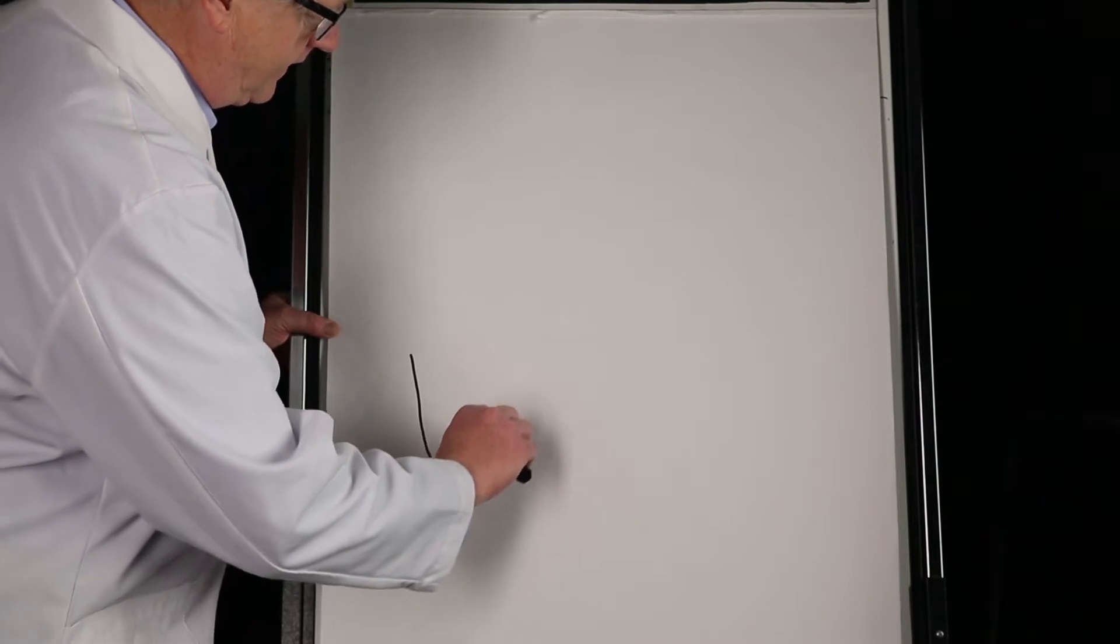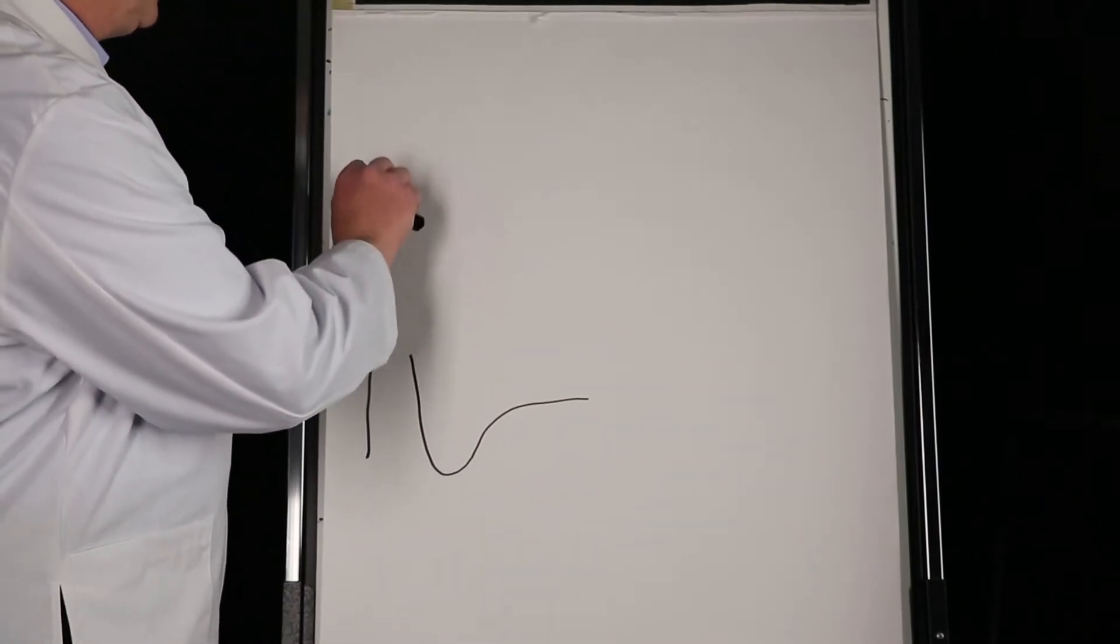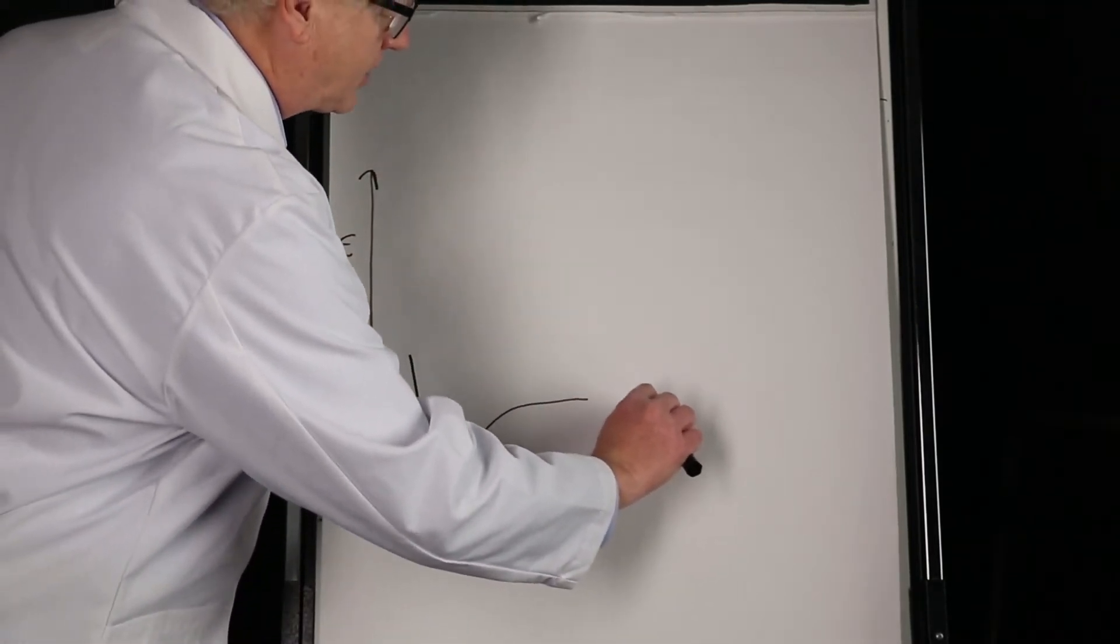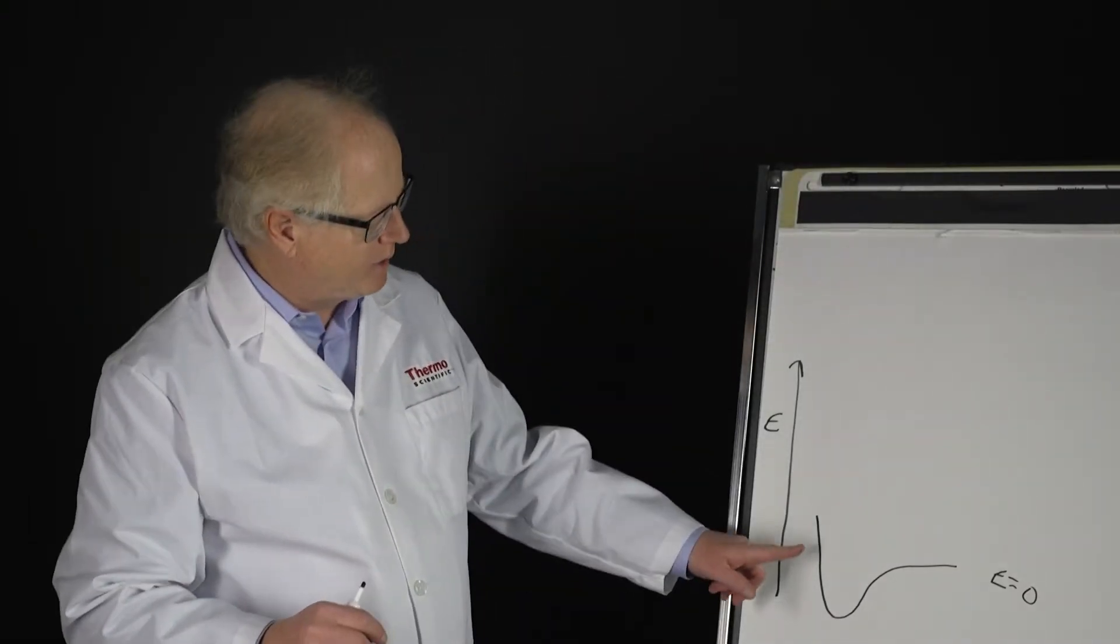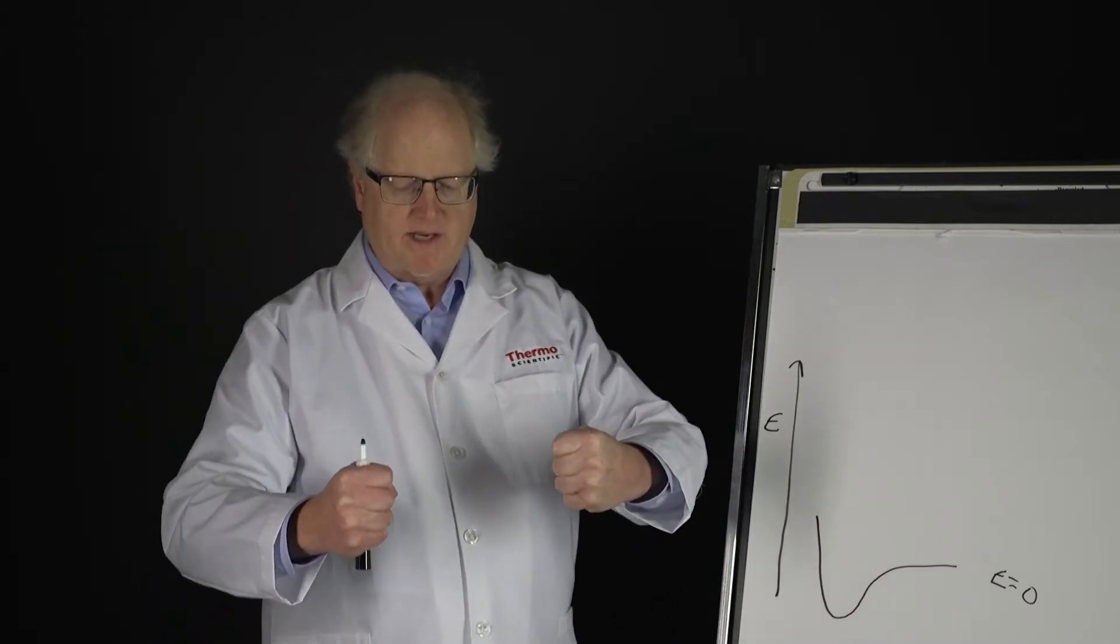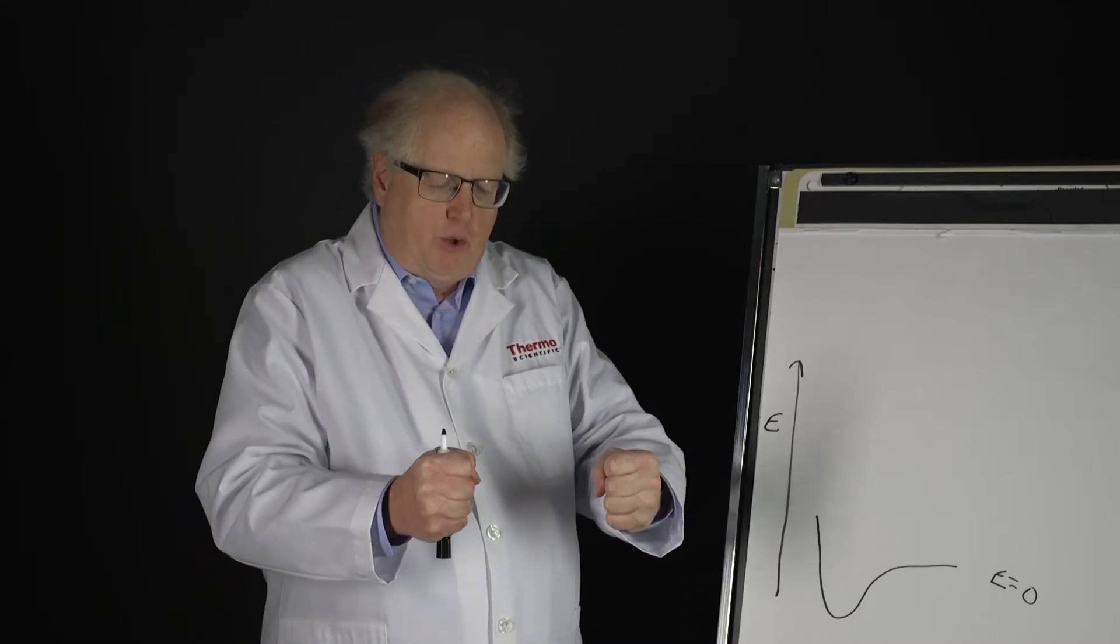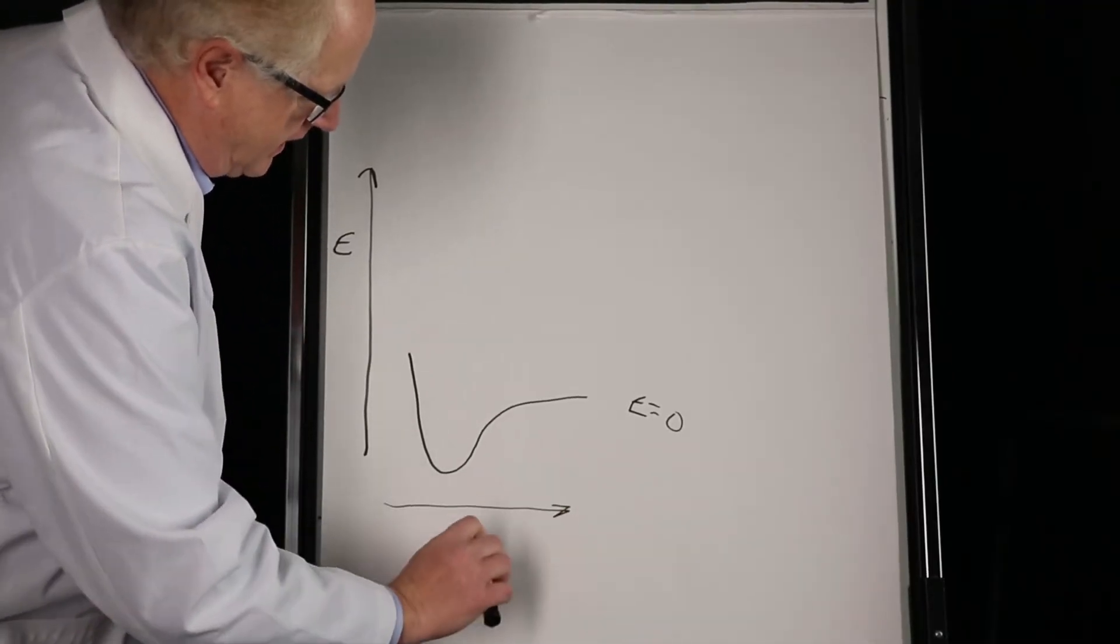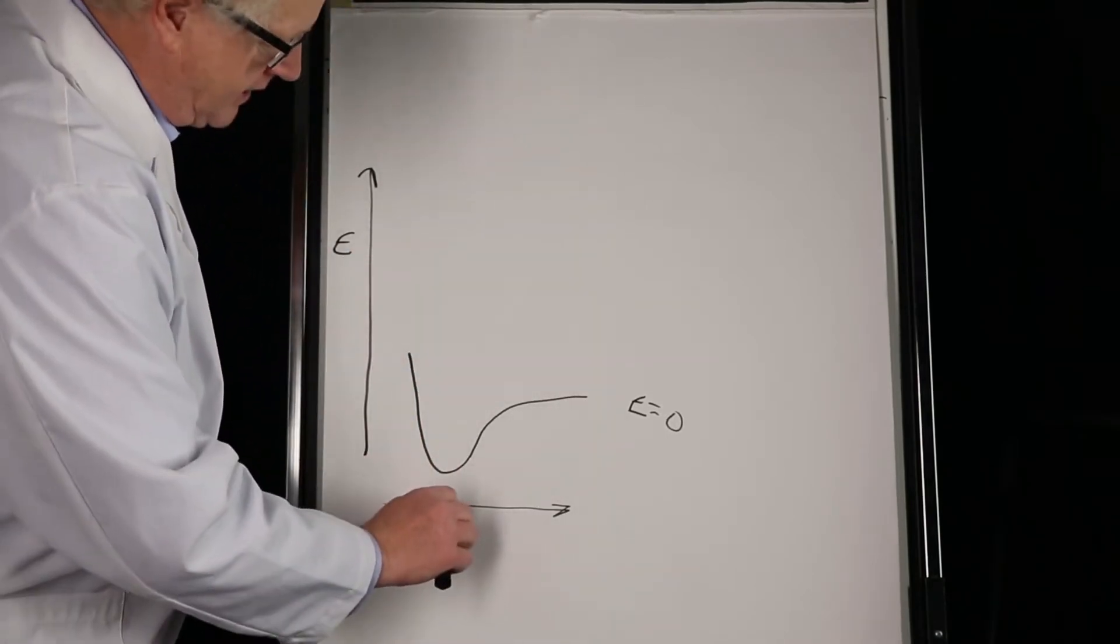We're going to look at energy going up here, E, and this is going to be the ground electronic state, the ground electronic state of the molecule. Now why is it shaped like this? It's shaped like this because as a molecule, and we're going to kind of assume diatomics here, as the diatomic pushes together, what's being plotted along this axis is going to be R or the distance, the bond distance.